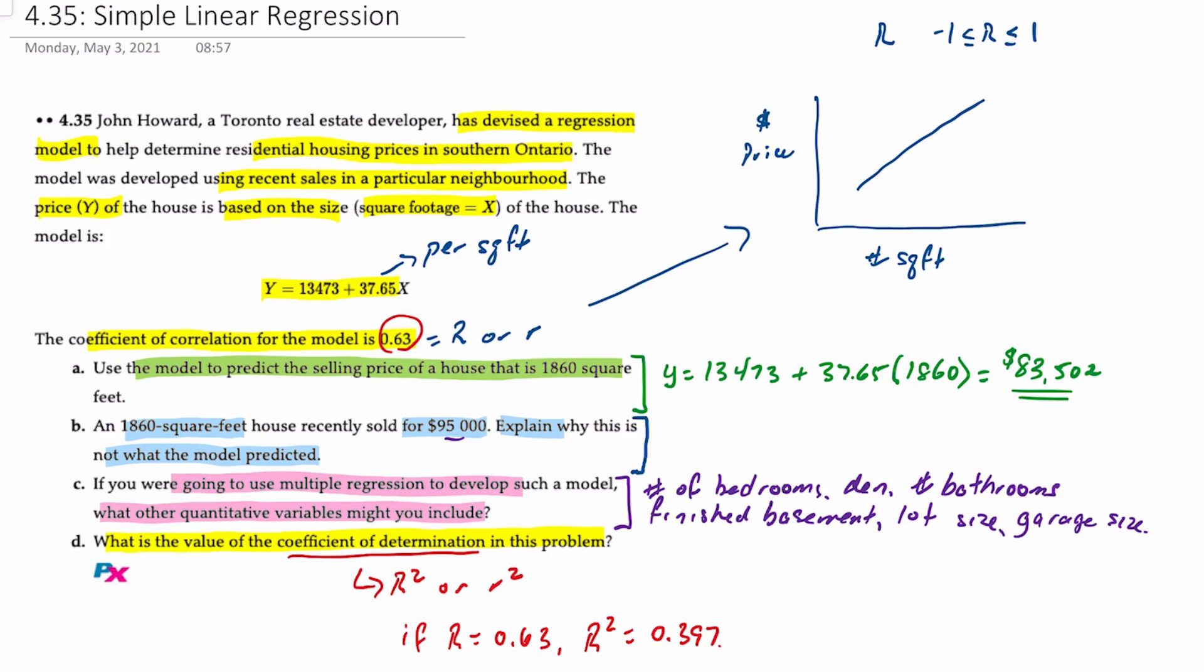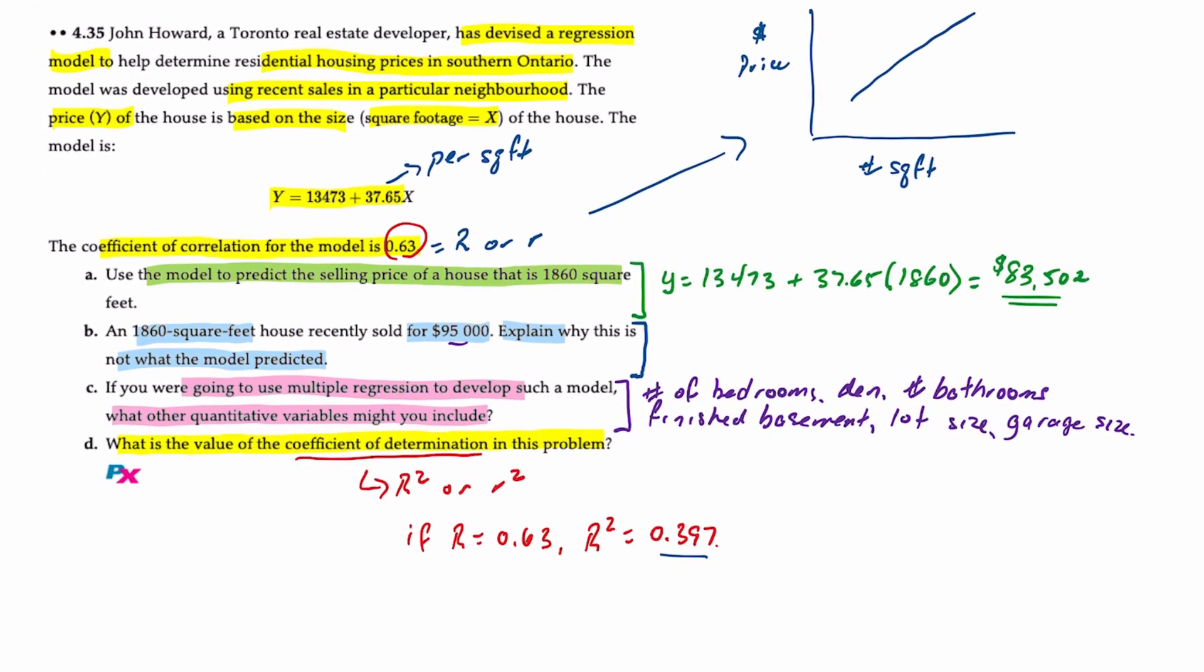Now what R squared means is that this tells us that approximately 39.7% of the change in house price can be explained by the change in square footage or size of the house.